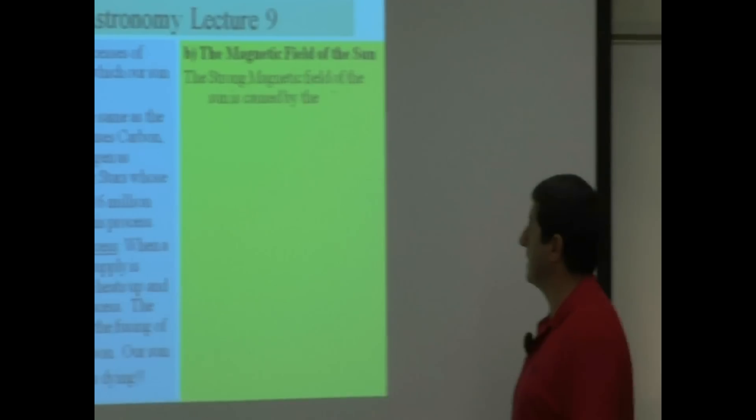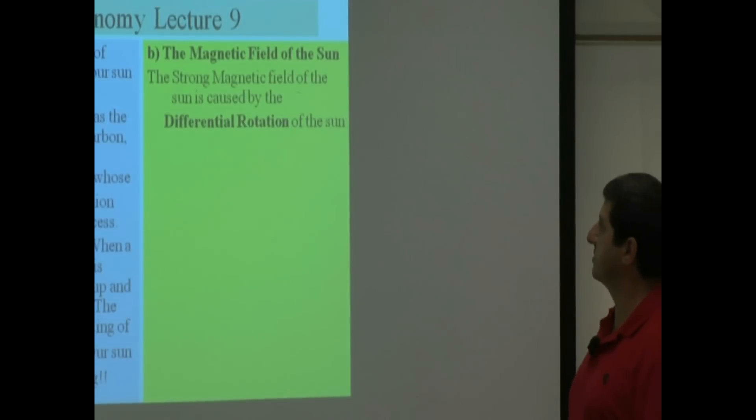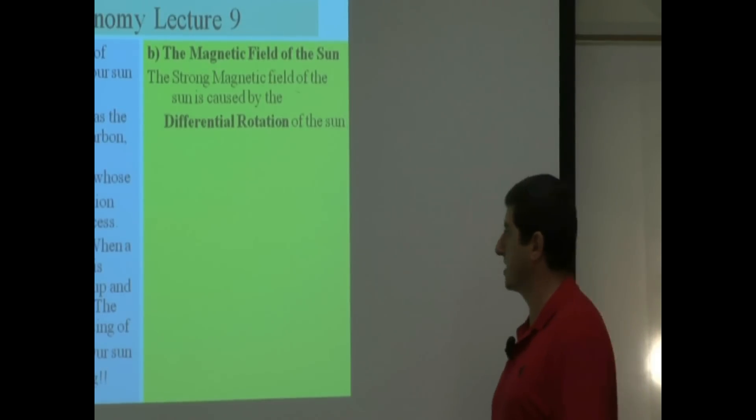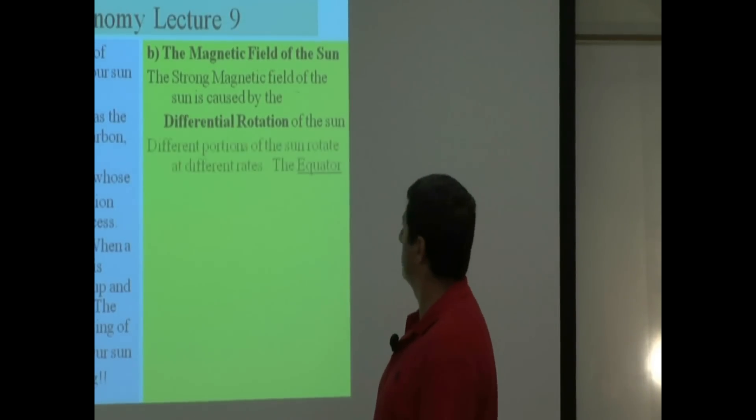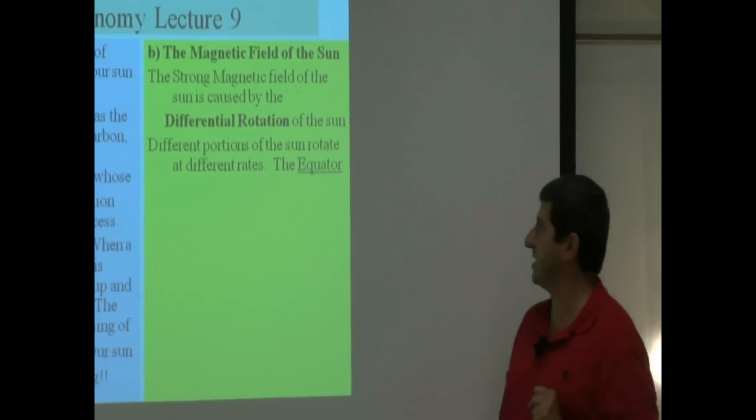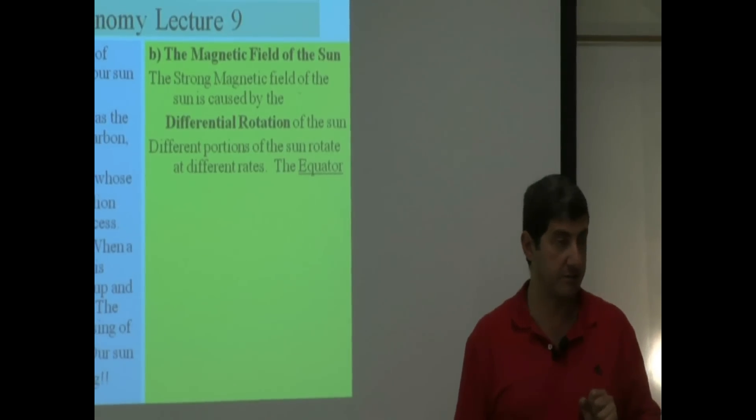The magnetic field of the Sun, the strong magnetic field of the Sun is caused by the differential rotation of the Sun, which means different portions of the Sun rotate at different rates.